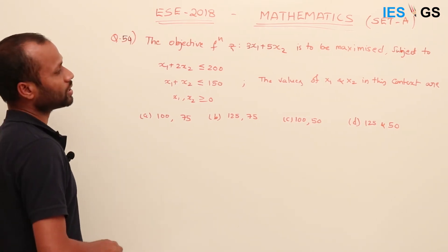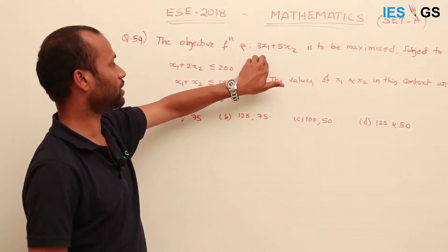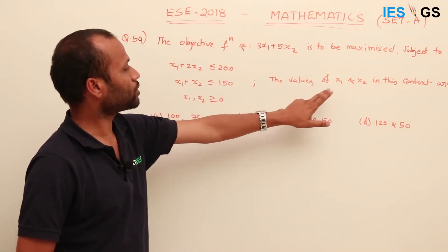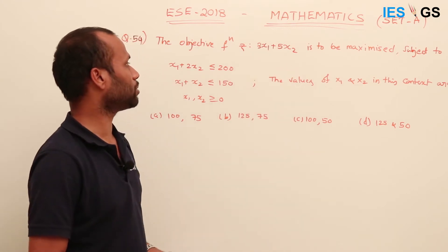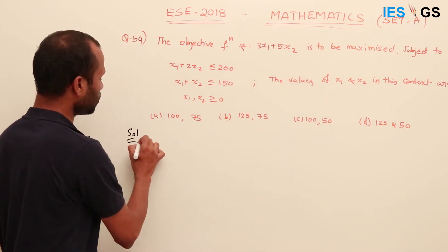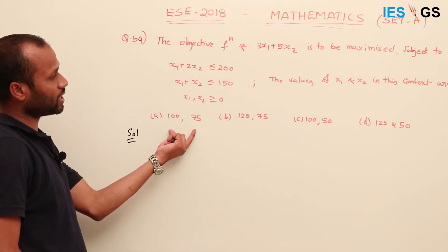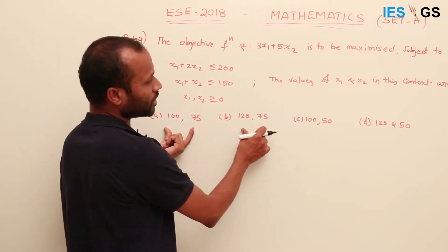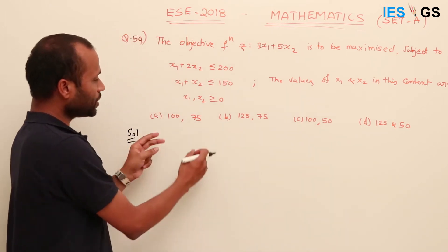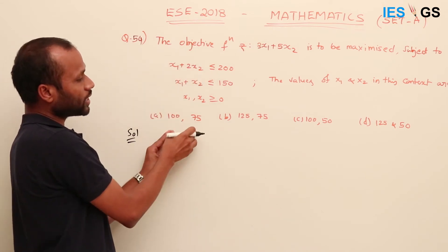This is somewhat similar to question 25. There, they asked for the maximum value of the function; here, they ask for the values of x₁ and x₂ at which the maximum occurs. Since the variable values are given as options, whichever set of variables satisfies the given constraints — you first find those out by back substitution.